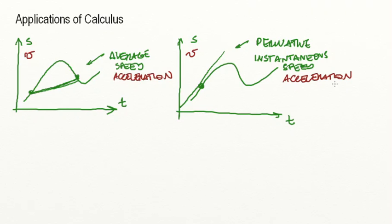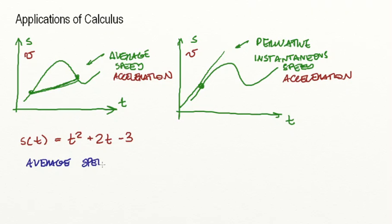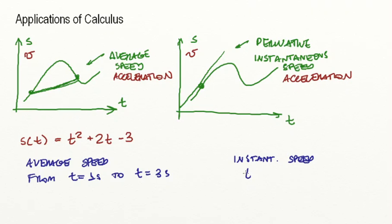Now, what if we're given an equation and we're asked for both the average speed and the instantaneous speed? How would we calculate those? So let's take a look at one example. Consider the same displacement function: t squared plus 2t minus 3. And let's say that we're asked for the average speed from time equals 1 second to time equals 3 seconds, and also we're asked for an instantaneous speed at time equals 1. Notice that when we're calculating an average speed, we need more than one point because we're getting a chord. When we're calculating an instantaneous speed, we only need one point since this is a tangent line.